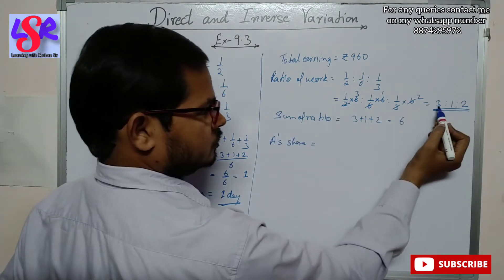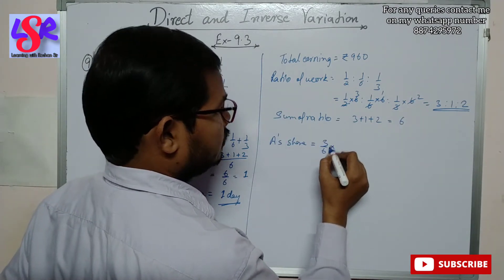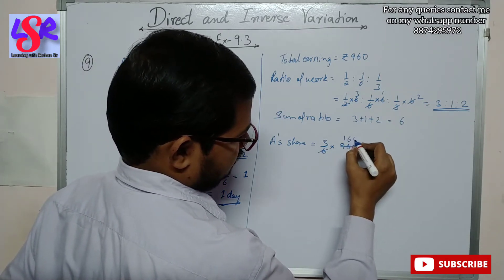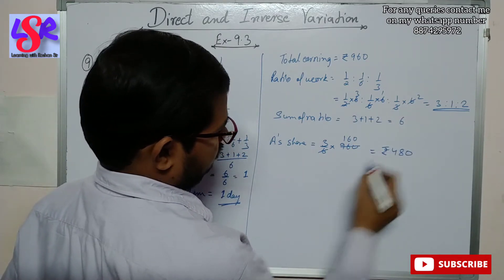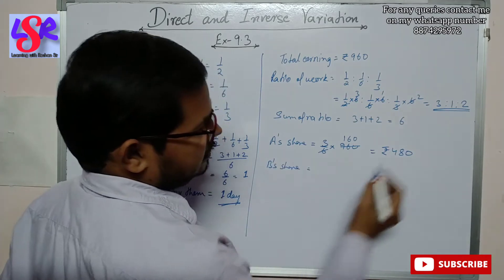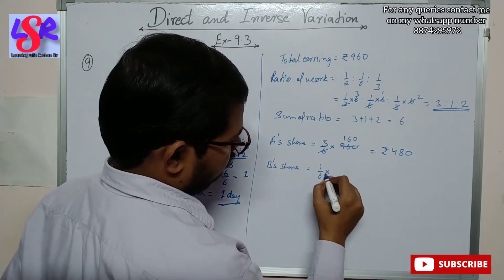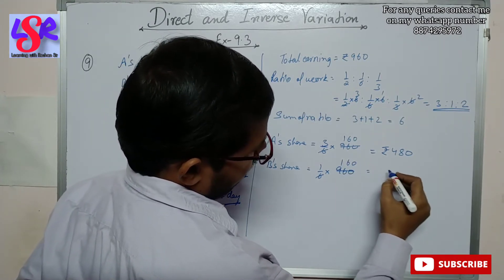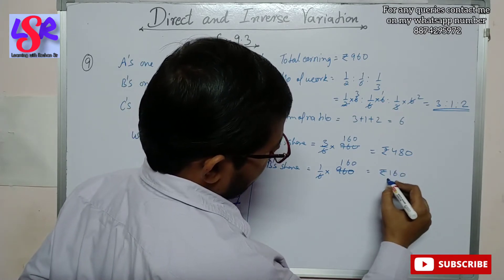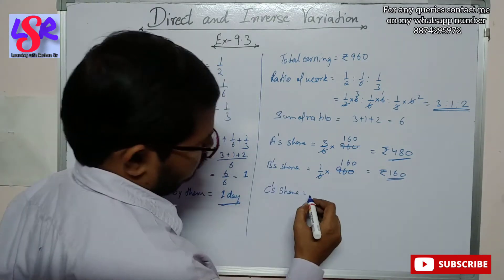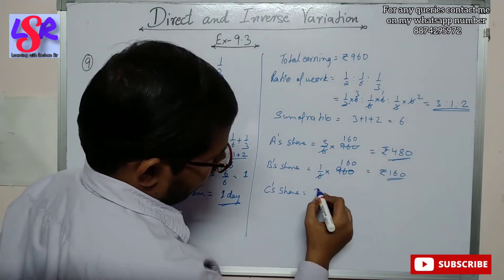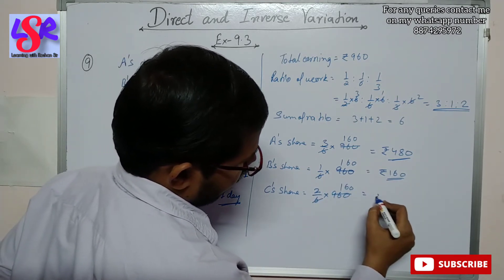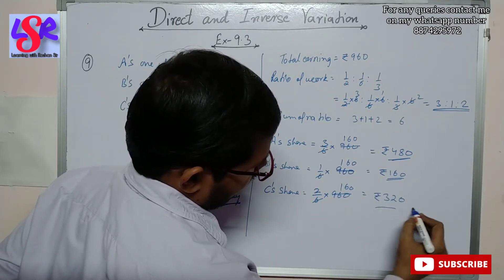A's share equals 3 upon 6 into 960, which gives us rupees 480. B's share equals 1 upon 6 into 960, which gives us rupees 160. C's share is 2 upon 6 into 960, which equals rupees 320 as the answer.